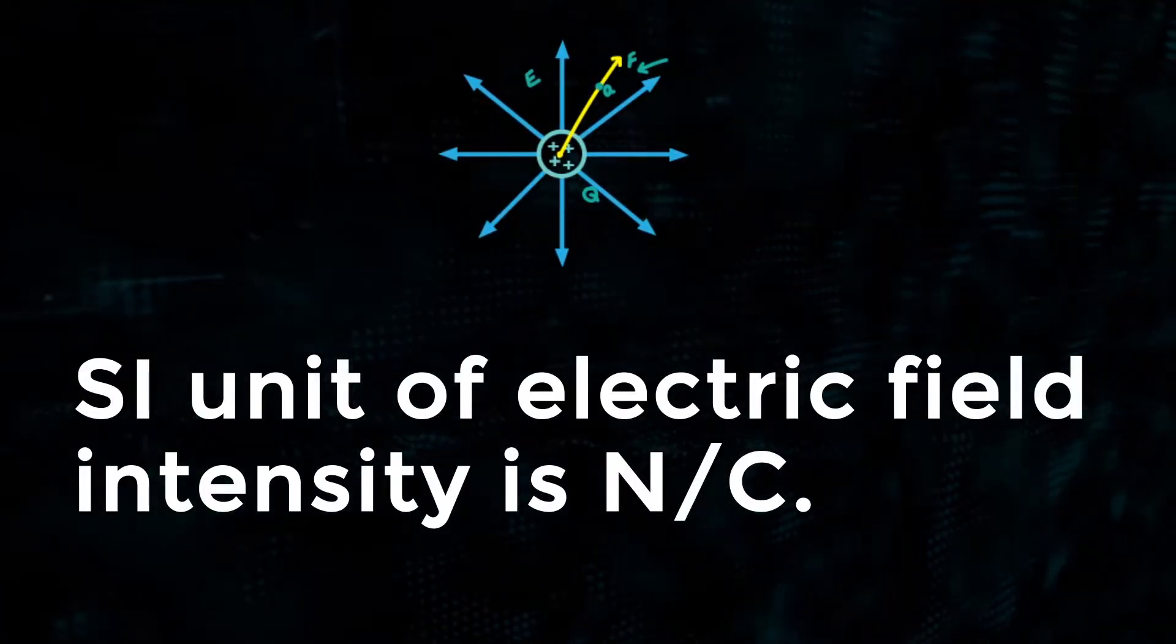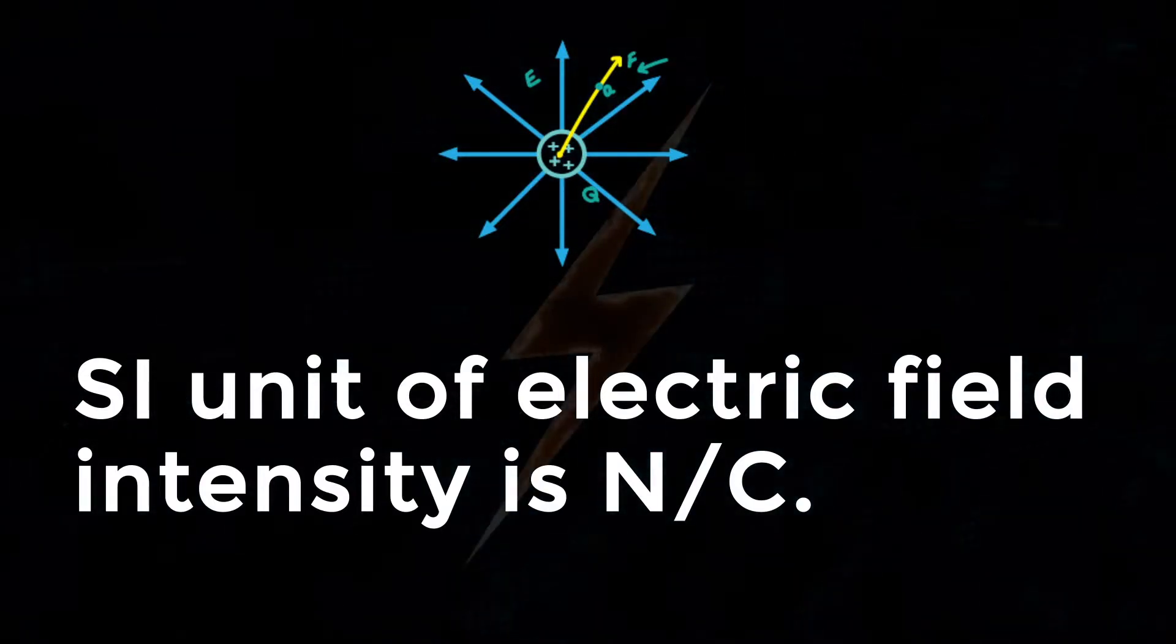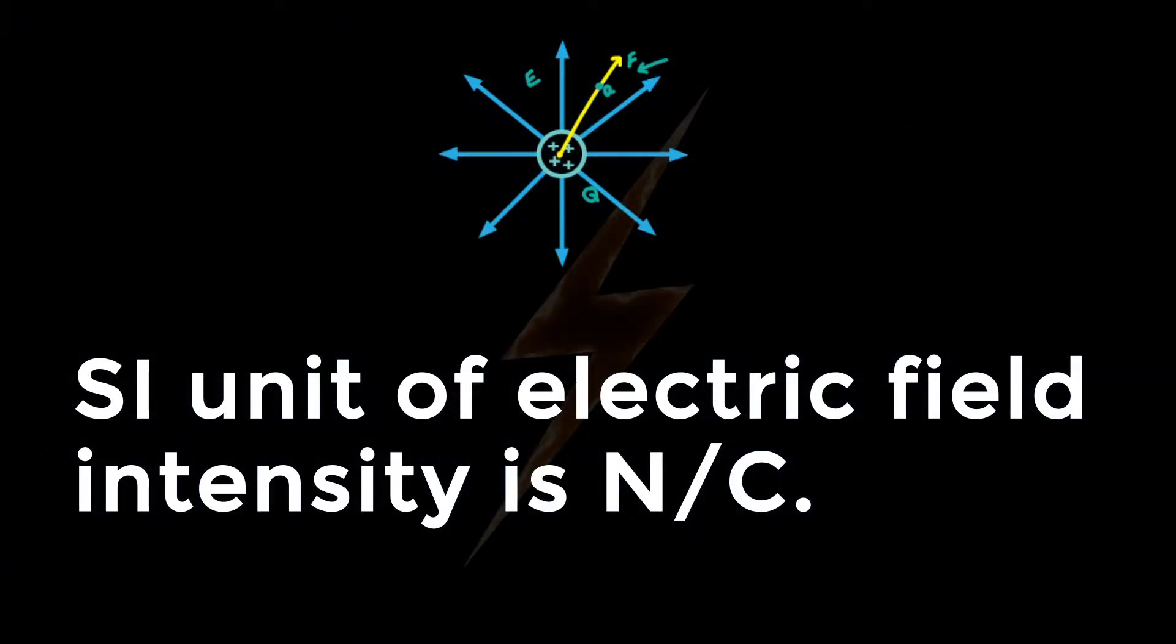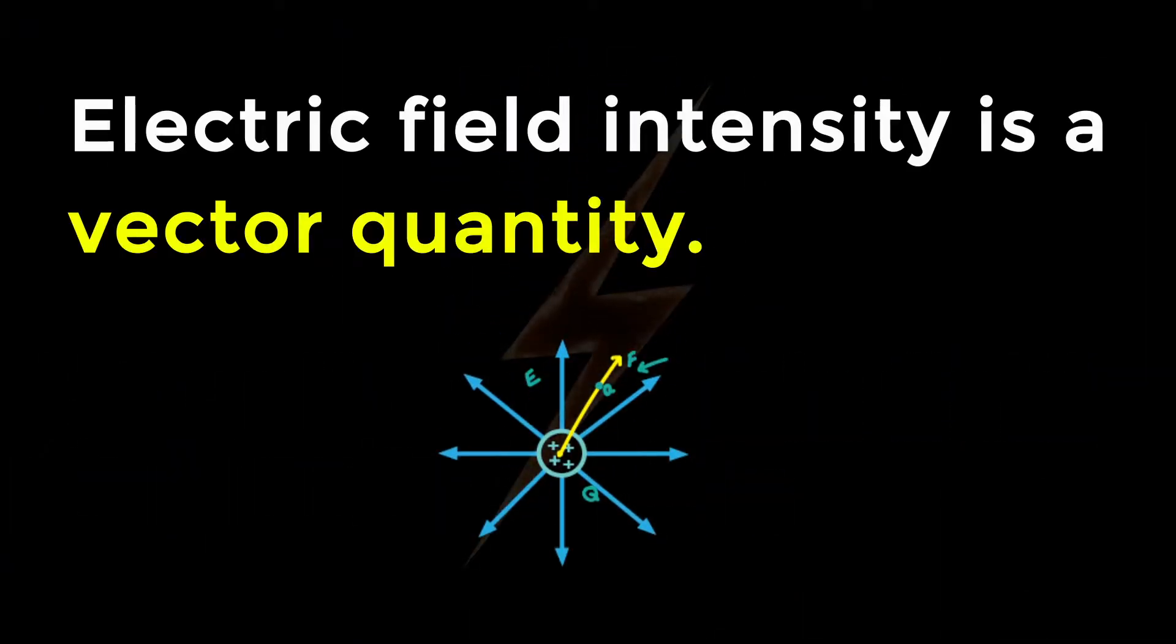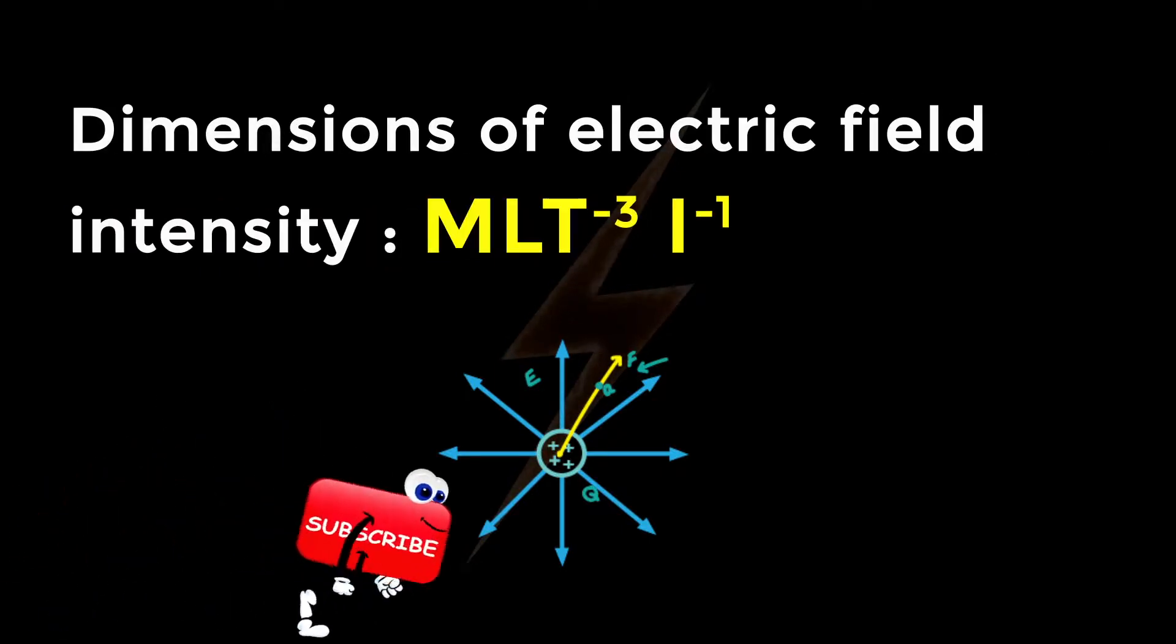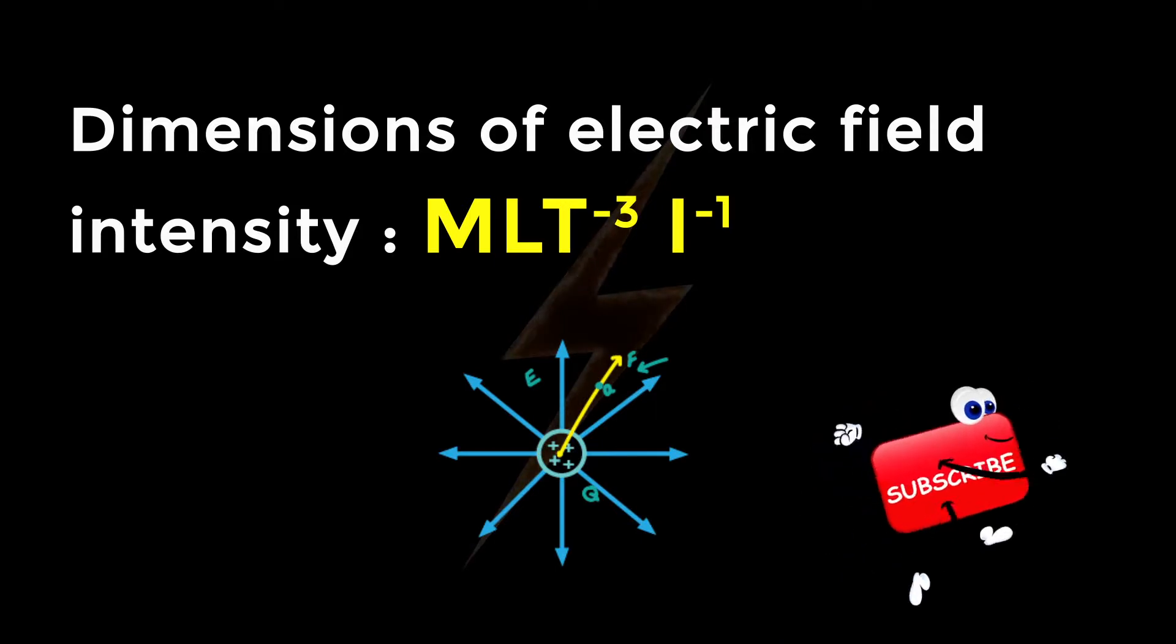SI unit of electric field intensity is N/C, that is Newton per coulomb. Electric field intensity is a vector quantity. Its direction is the same as that of electrostatic force acting on the positive test charge. The dimensional formula is MLT⁻³I⁻¹.